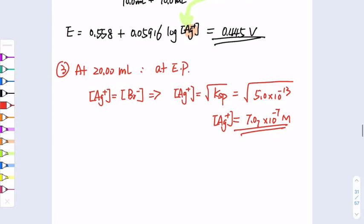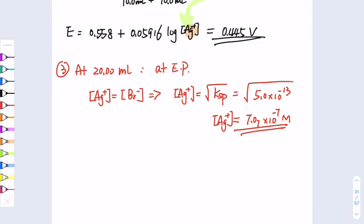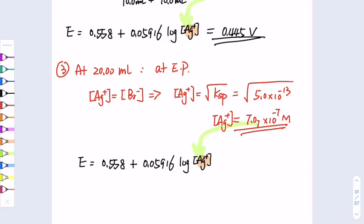We plug [Ag⁺] = 7.07 × 10⁻⁷ M into the equation: E = 0.558 + 0.05916·log(7.07 × 10⁻⁷) = 0.194 V. That is the potential at the equivalence point.